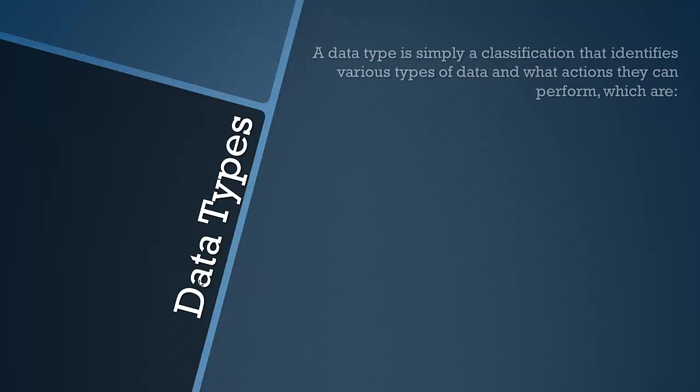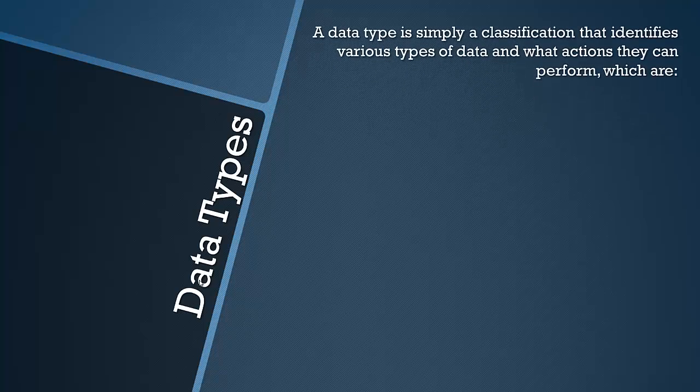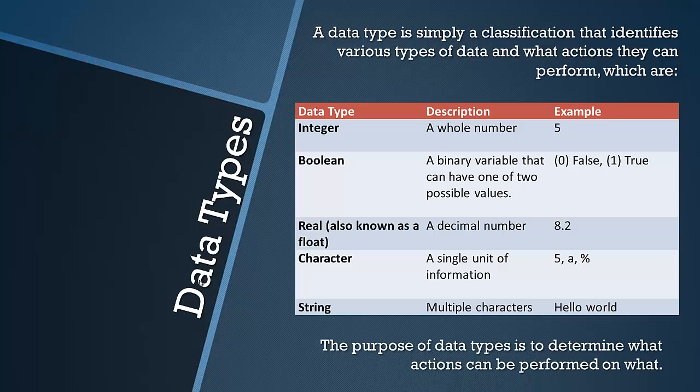Now let's have a look at data types. A data type is simply a way of classifying types of data and what actions they can perform. The ones you have to know are integer, boolean, real, character and string. Integers are whole numbers. A boolean is a data type that can have one or two values, either false or true, and only those two. A real is a decimal number, also known as a float.